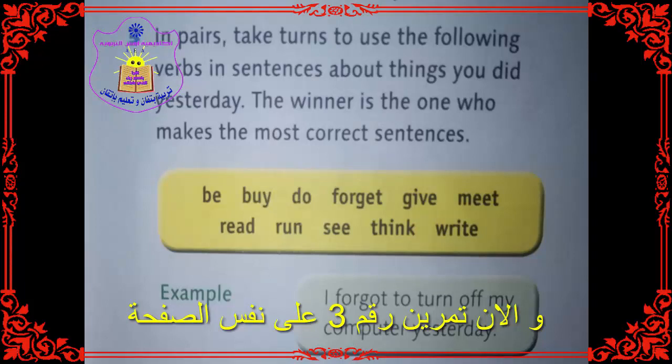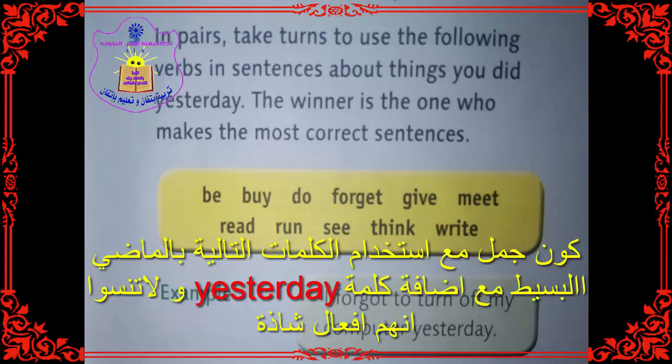Now another exercise on the same page — exercise number 3. In this exercise you should use the following verbs in sentences about things you did yesterday, so you must use past simple. You must put these verbs into the past simple form. These verbs are irregular verbs, so you must put them into the correct form and make correct sentences using the word 'yesterday'.